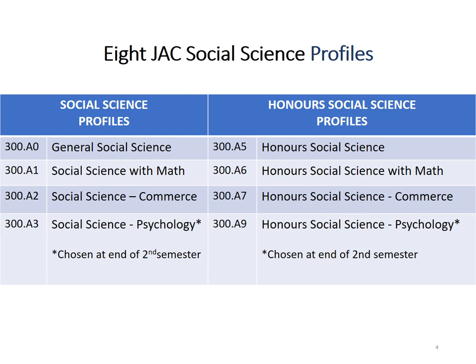Social science students may follow one of four profiles: General Social Science, Social Science with Math, Commerce, or Psychology. The same four profiles are also offered in an honors version, a distinction that will be illustrated later in this presentation.